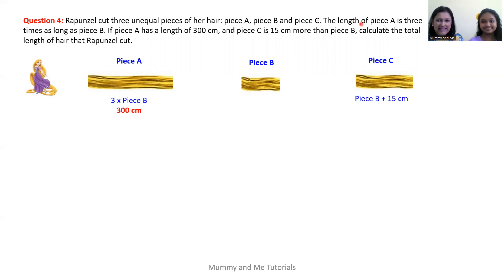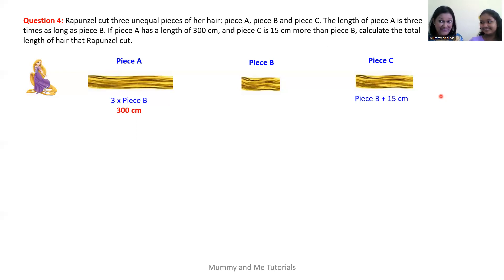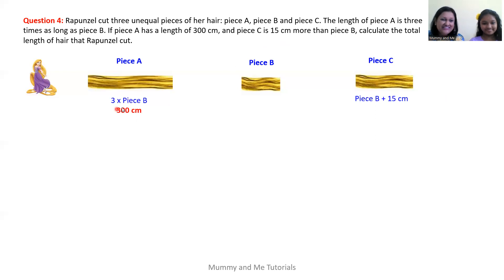So what we're saying here is that piece A is three times as long as piece B, and piece C is 15 centimeters more than piece B. There's a brief aside about why Rapunzel cut her hair — perhaps it was too long to manage, or maybe her mother told her to. All right, so let's analyze this question.